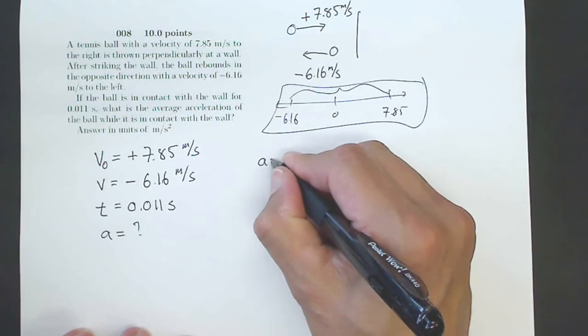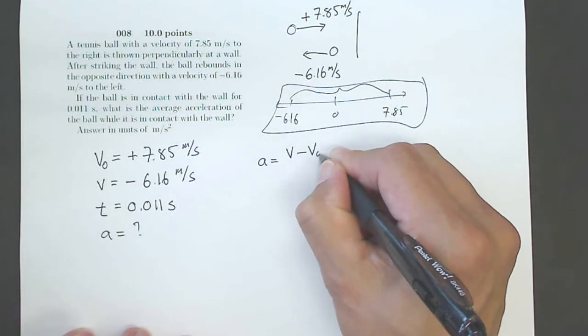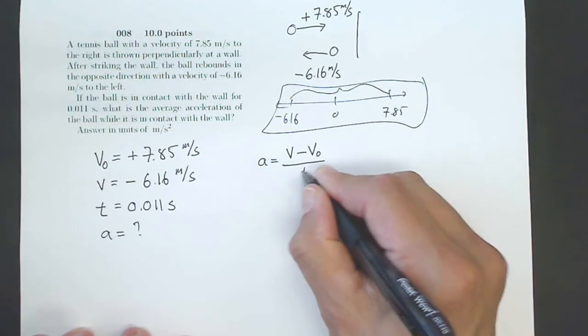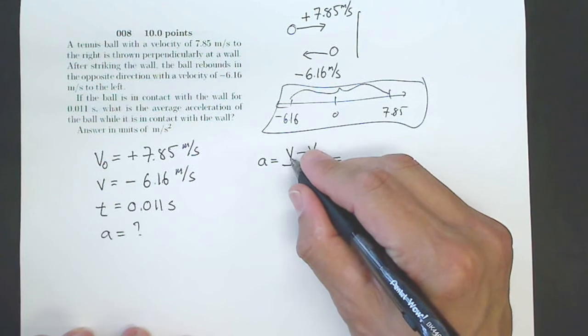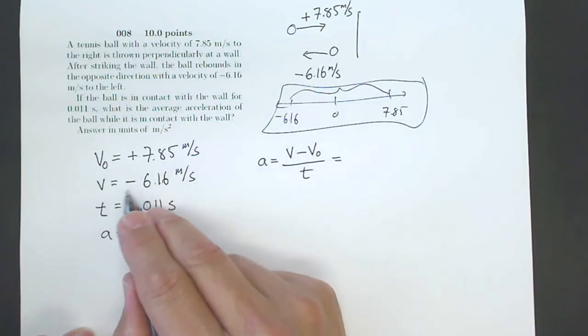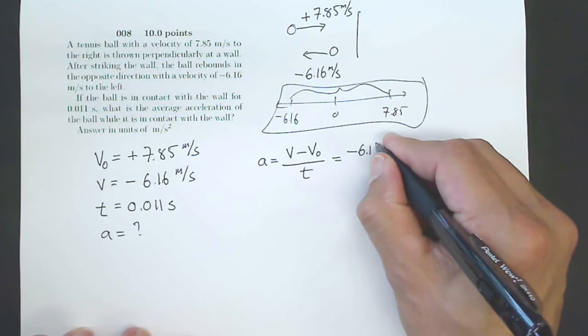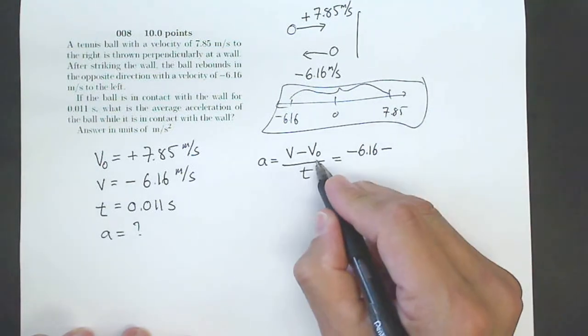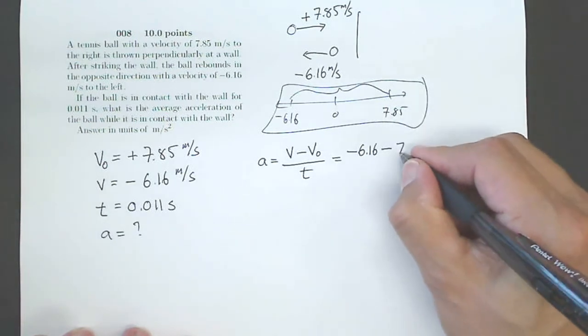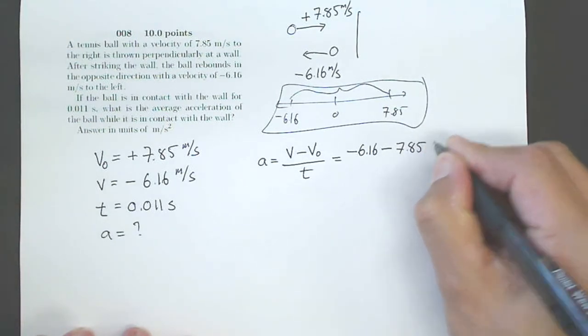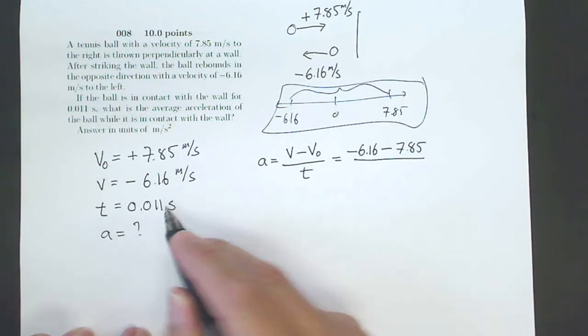Now, what's my equation? My acceleration is my final velocity minus my initial velocity divided by the amount of time. So let's see what that is. My acceleration is my final velocity, my final velocity is negative 6.16. Negative 6.16 minus my initial velocity is 7.85. So it's minus another 7.85 divided by my time, 0.011 seconds.